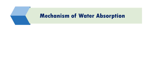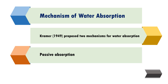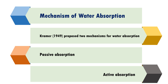To understand the mechanism of water absorption, it has been proposed by Kramer in 1949 that there can be two mechanisms: passive absorption and active absorption. What are these mechanisms and how do they differ? This is what we are going to study right now.